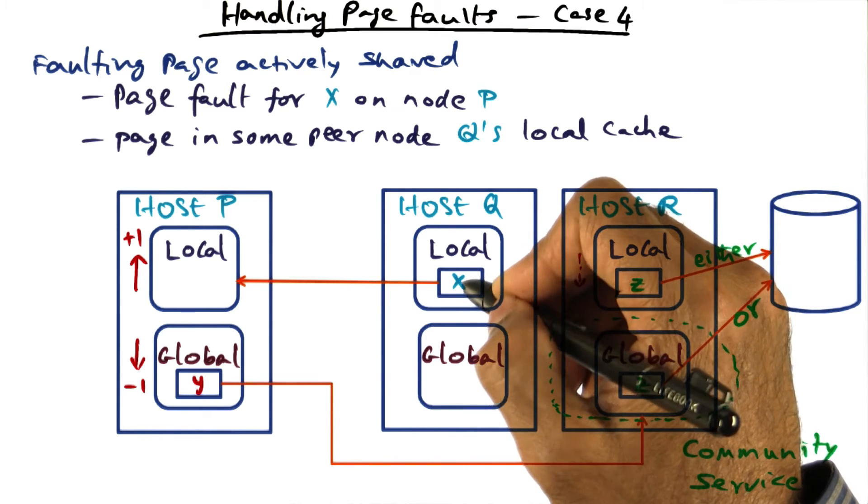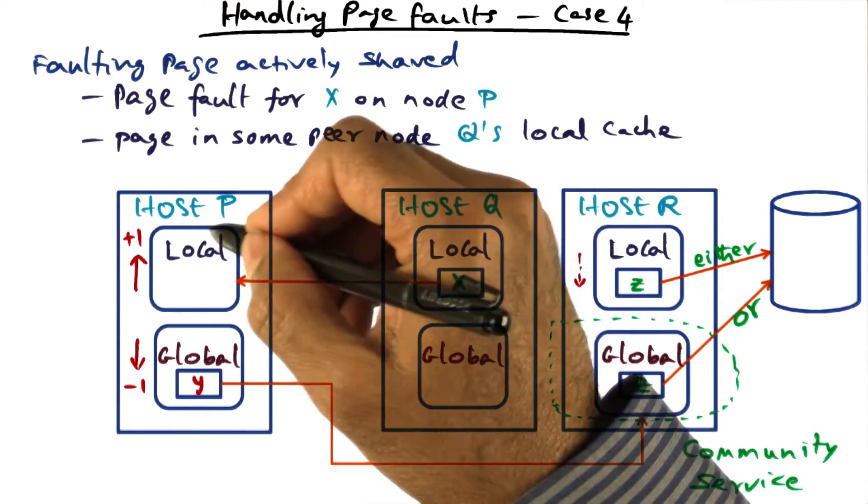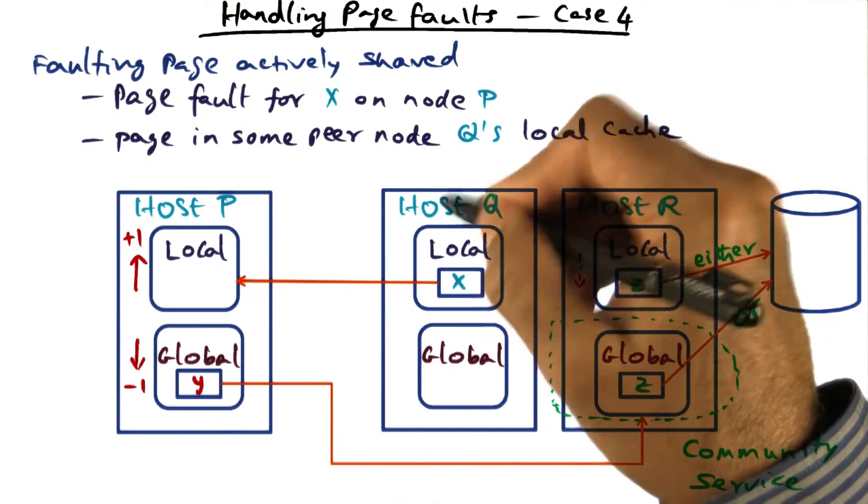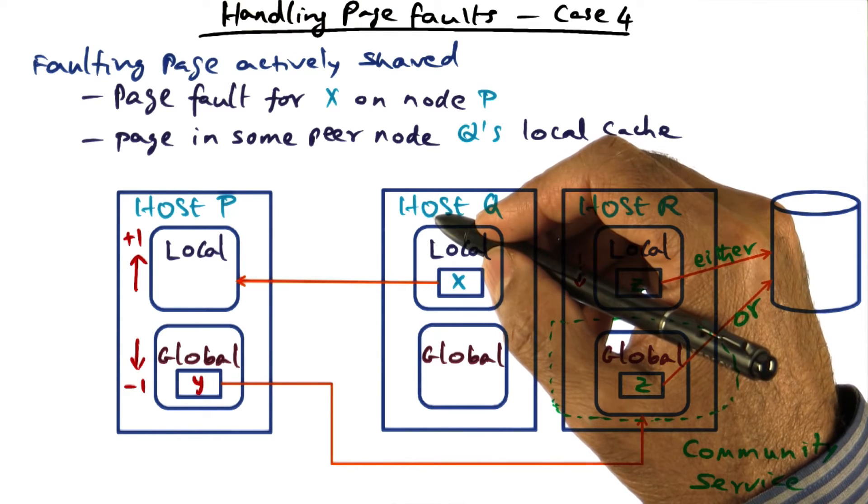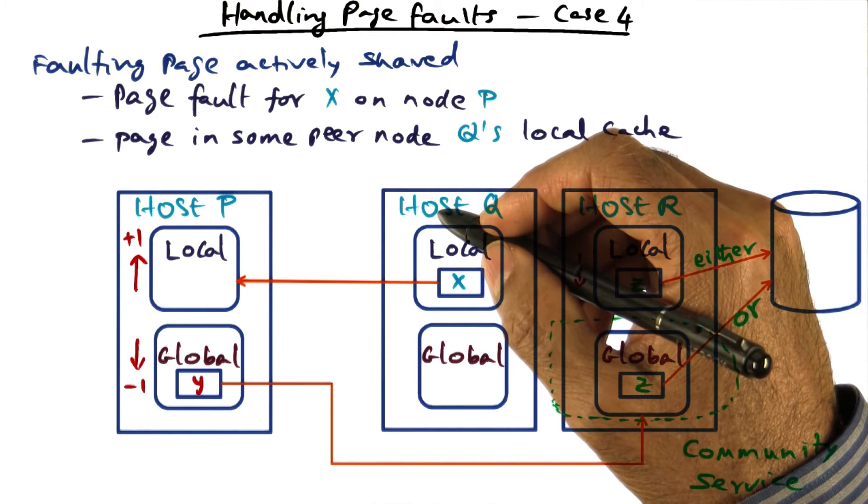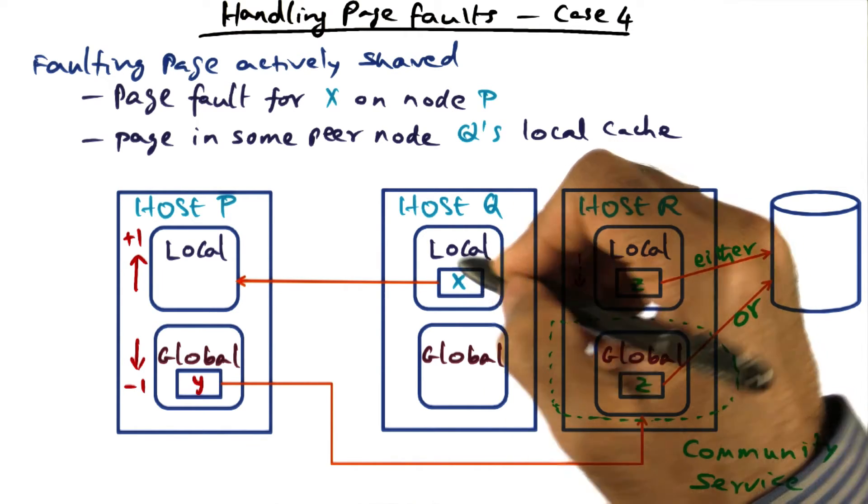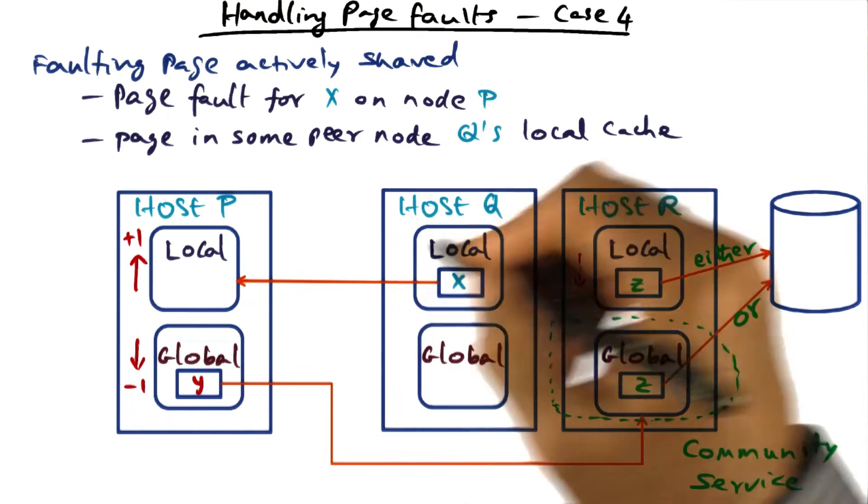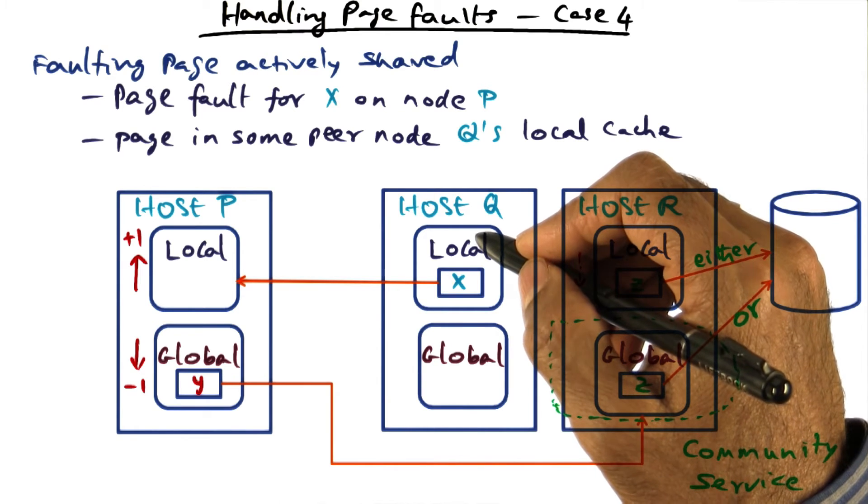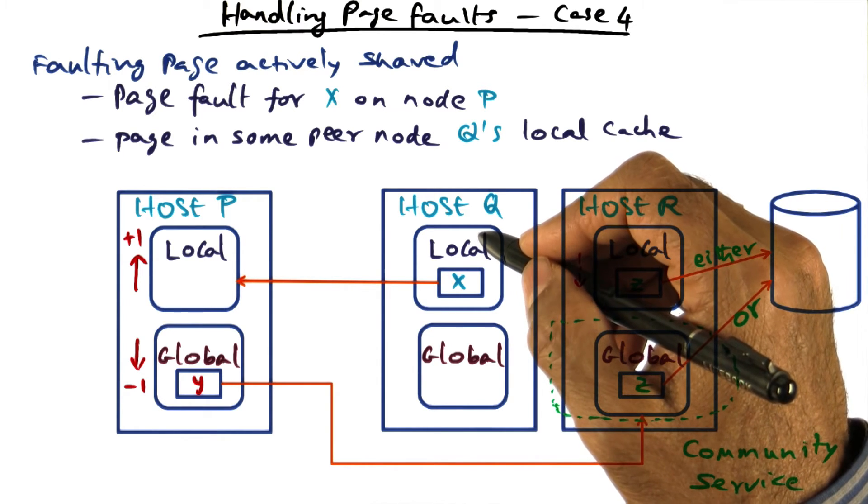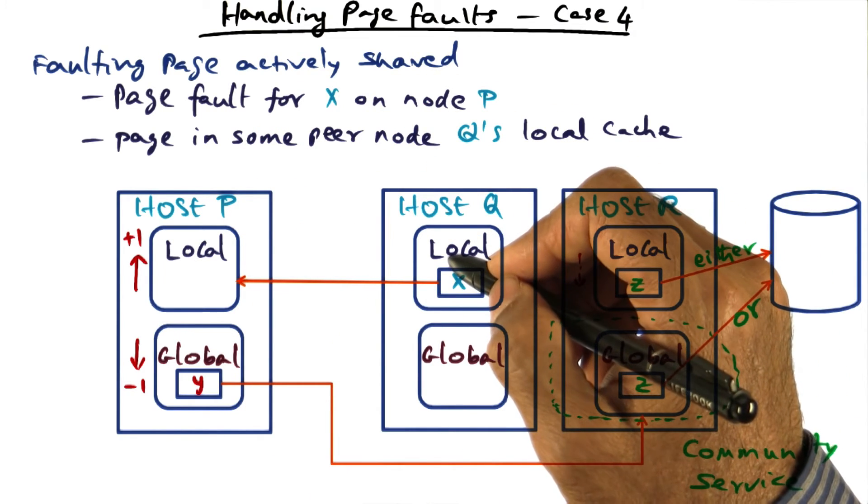And now X is present in the working set of both host Q and host P, which means actively some process on host P and some process on host Q are accessing this page X. I mentioned earlier that this is not something that GSM worries about. If coherence has to be maintained for the copies of the same page existing on multiple nodes, that's not in the domain of GSM, because GSM is simply a paging device. So it doesn't worry about coherence maintenance, that has to be something that the application or some higher level of the software has to worry about.